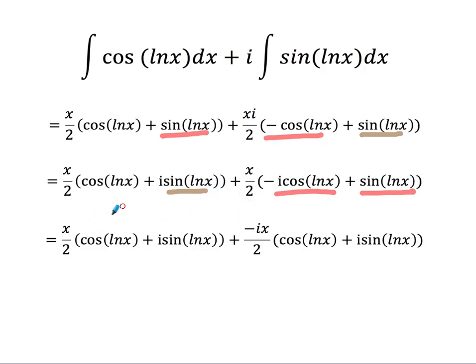Once I've got this, I'll keep this as it is. I'll rewrite x over 2 times minus i cos ln x plus sine ln x. Let's just check that's the same thing. Minus i x over 2 times cos. Yeah, I'm going to get the minus i as I wanted to here. And then minus i times i. i times i is minus 1. Minus i times i is positive. So this bracket and this bracket here, they're the same thing.